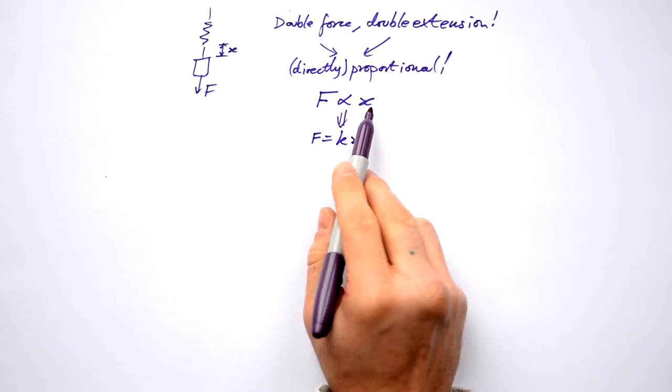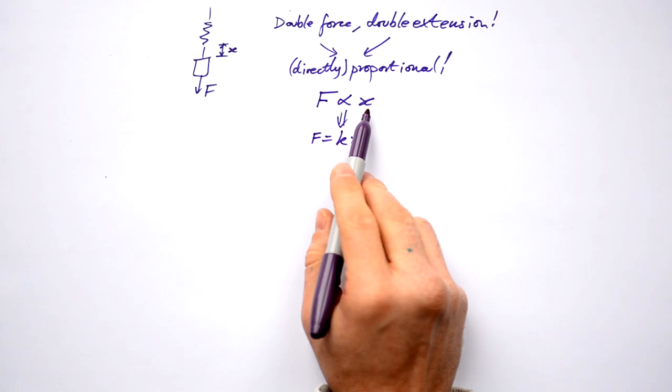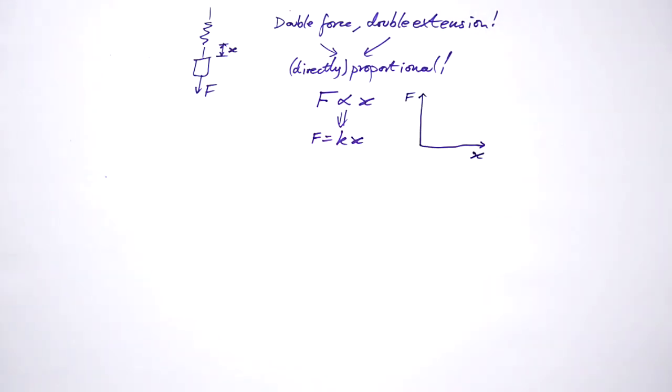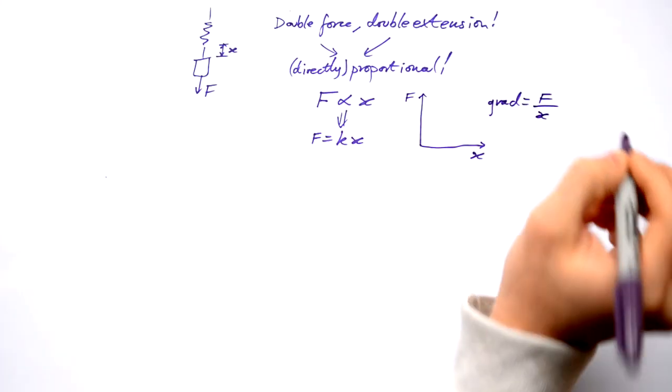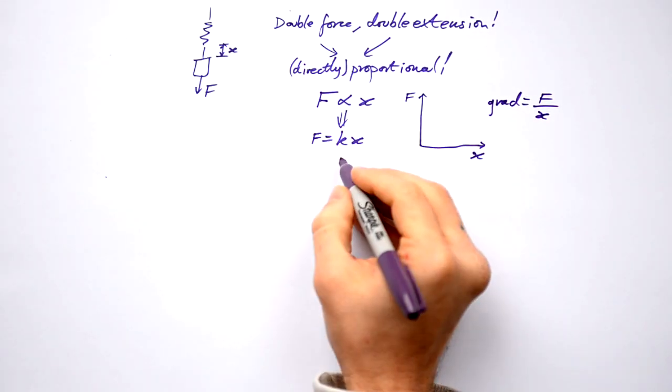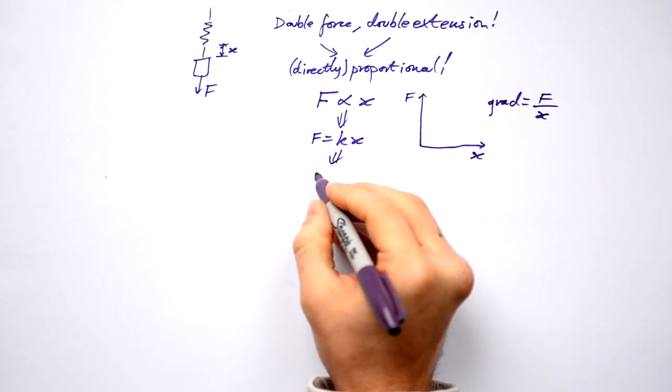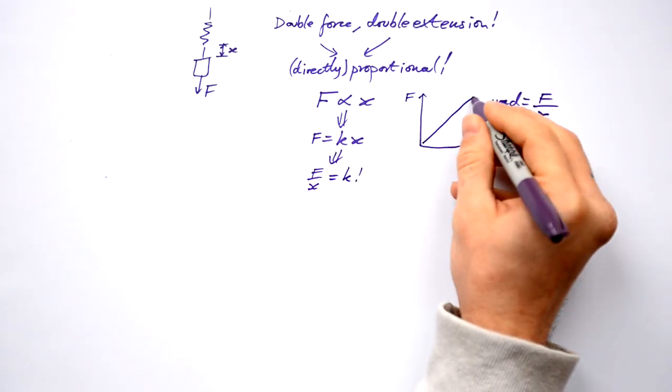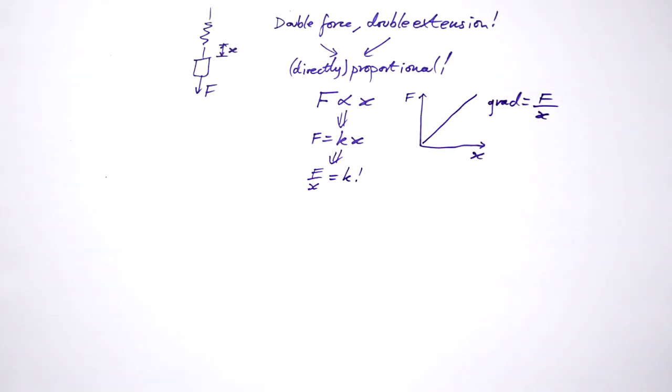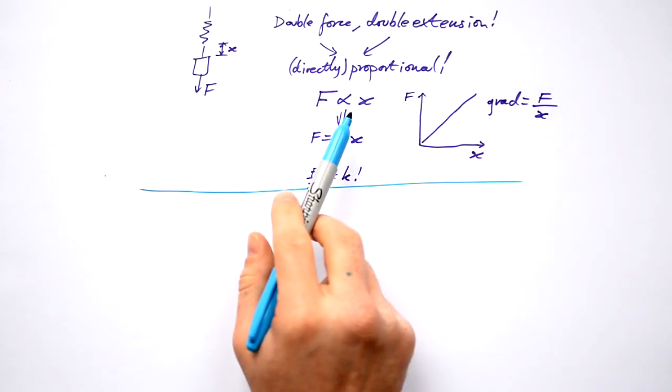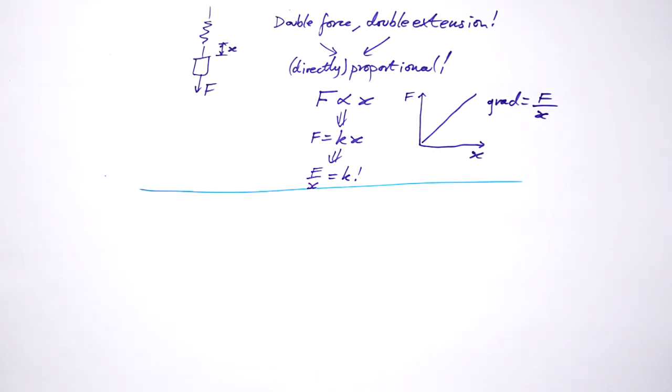That's where the spring constant comes from. So because we say that force is proportional to the extension, we can draw a graph of the force and the extension. What would the gradient of this be? It's going to be F divided by x at any point, or the change in F divided by the change in x. If we rearrange this, we find that F divided by x gives us the constant. So that must mean that we have a straight line, a constant gradient. So that's nice and easy when we just have something proportional to something else and one constant involved.